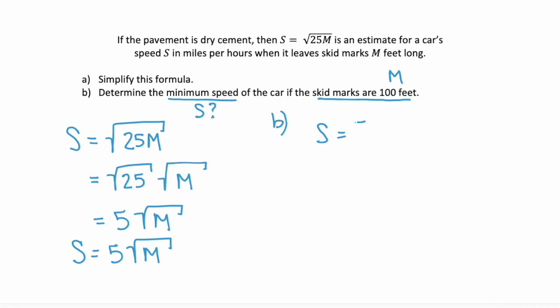Our equation is s equals 5 times the square root of m. So s will equal 5 times the square root of 100. And the square root of 100 is 10. So our answer here is 50. Well, 50 what? s is speed and it's in miles per hour. So this is 50 miles per hour.